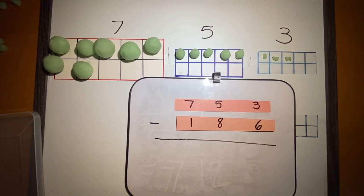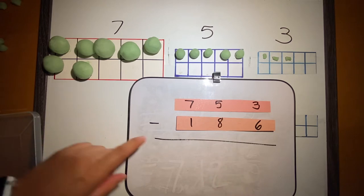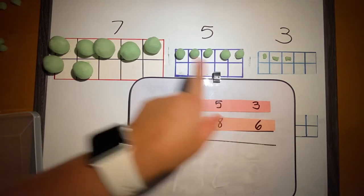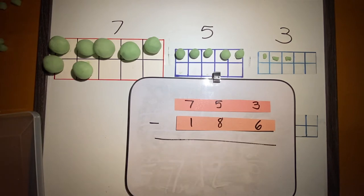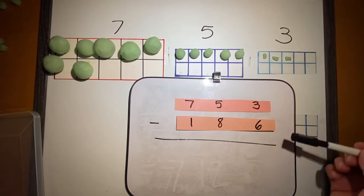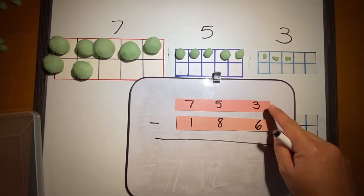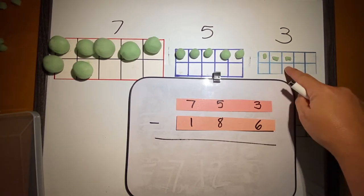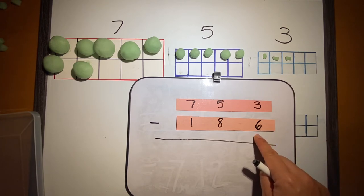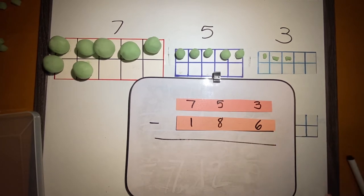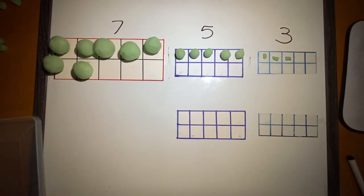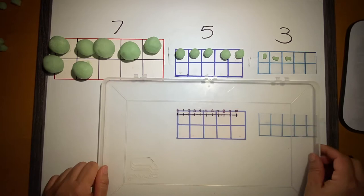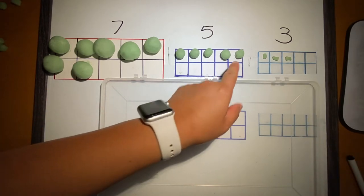We are going to subtract from 753, we are going to take away 186. We always start in the ones, and I see that I have three but I need to take away six. So what I'll do is I am going to borrow one, or I am going to take one of the tens and convert it into ones.